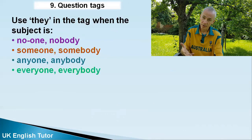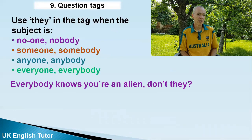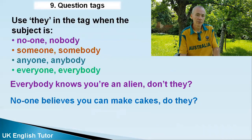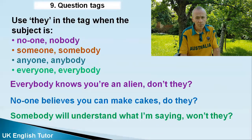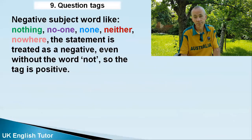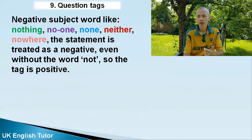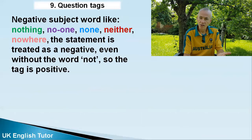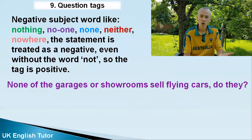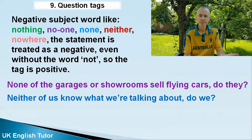'They' is also used in the tag when the subject is someone, somebody, anyone, anybody, no one, nobody, everyone, everybody. 'Everybody knows you're an alien, don't they?' 'No one believes you can make cakes, do they?' 'Somebody will understand what I'm saying, won't they?' When the subject is a negative word like nothing, no one, nowhere, or neither, the statement is treated as negative even without the word 'not,' so the tag is positive: 'None of the garages or showrooms sell flying cars, do they?' 'Neither of us know what we're talking about, do we?'